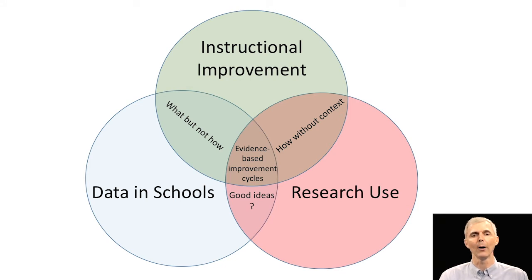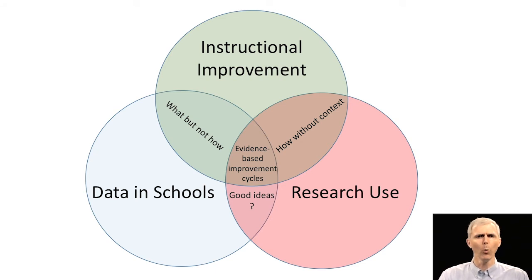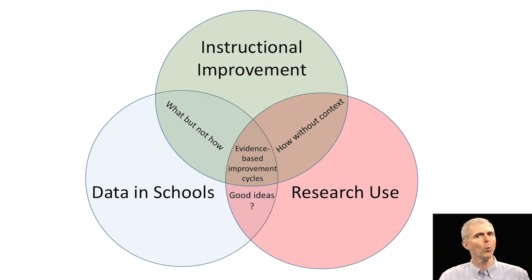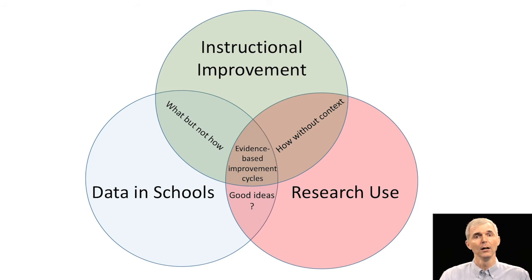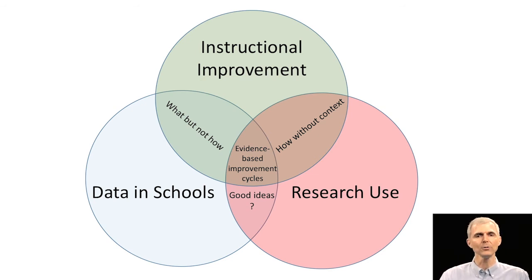Let's talk about the overlaps in the Venn diagram. Data in schools overlapped with instructional improvement, I think of as 'what, but not how.' We know what the issue is — we have the data, we know where we want to go. But we don't know what intervention to use. In many schools, if you're not trained to find research evidence, you just invent a new instructional intervention. There's a lot of good evidence we can bring into that decision, which is what's missing when you don't include research use.